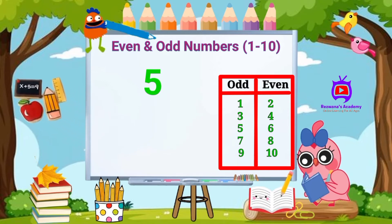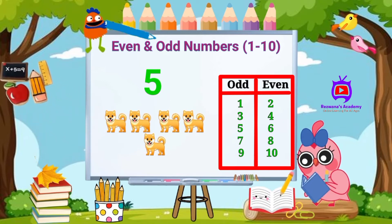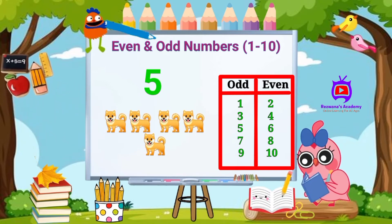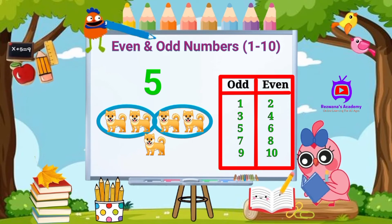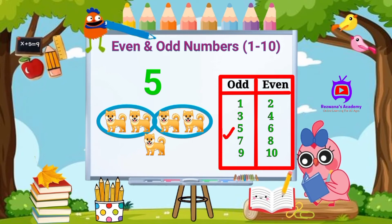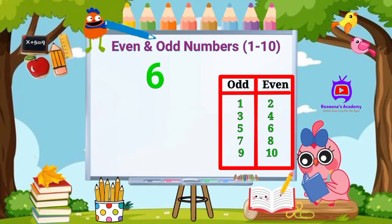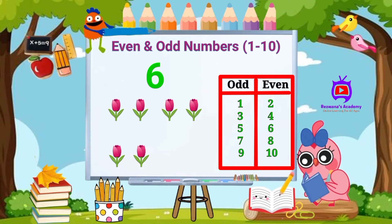Number five — we have five dogs here. Group them into twos — one is left alone, so five is an odd number. Number six — we have six flowers. Group them into twos — nothing is left, so six is an even number.